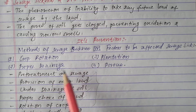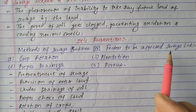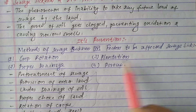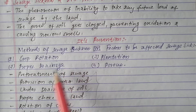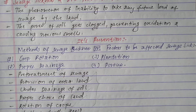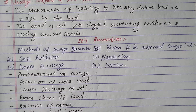These are the main preventions of sewage sickness and factors affecting sewage sickness: crop rotation, proper drainage, plantation, porous soil, pre-treatment of sewage, provision of extra land, under drainage of soil, proper choice of land, rotation of crops, and shallow depth application.